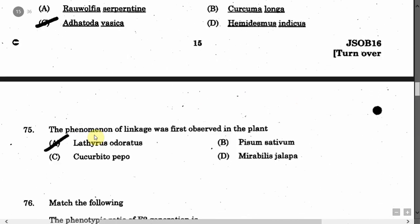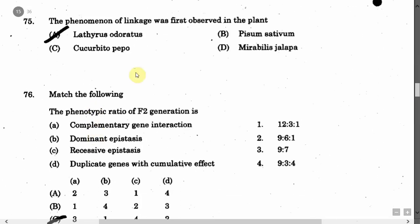The next question is: The phenomenon of linkage was first observed in the plant — Option A: Lathyrus odoratus. Option B: Pisum sativum. Option C: Cucurbita pepo. Option D: Mirabilis jalapa. The correct answer is Option A, that is Lathyrus odoratus.